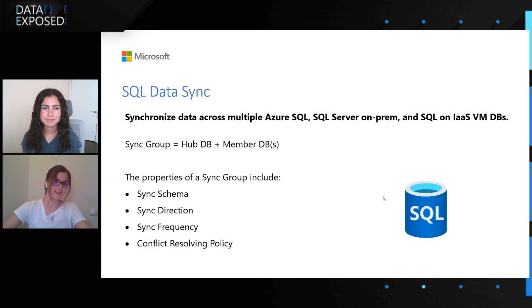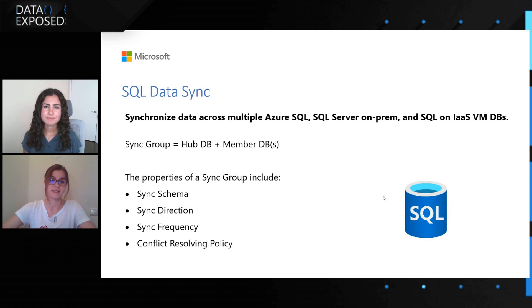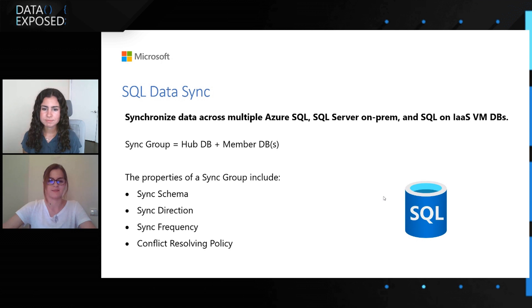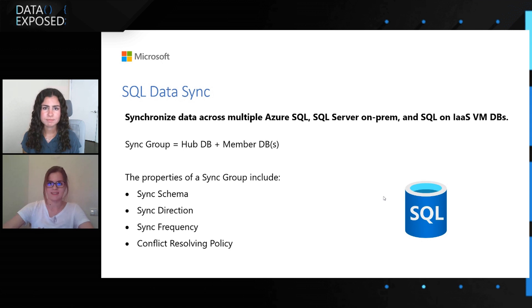Very simply put, SQL Data Sync helps you synchronize your data across Azure SQL Databases and SQL Server. The whole concept of SQL Data Sync revolves around the Sync Group. The Sync Group consists of a hub database, which has to be in Azure SQL Database, and one or more member databases, which can be either Azure SQL DBs or SQL Server DBs on-prem. There are four key properties around the Sync Group. When you create a Sync Group, you have to set up the Sync Schema, which is basically the selection of tables that you want to have synchronized.